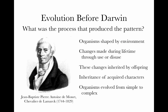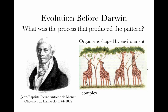Lamarck further argued that changes acquired during an organism's lifetime could be inherited by offspring — the inheritance of acquired characters. The classic example is giraffes with short necks stretching to reach higher leaves; through that effort, their necks became a little longer, those slightly longer necks passed on to offspring, and over generations necks grew longer and longer. We now know that in most cases, characteristics acquired during an organism's lifetime are not passed on — with our current knowledge of genetics, only heritable traits encoded in genes are passed down.